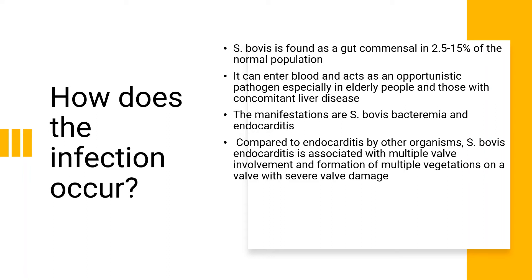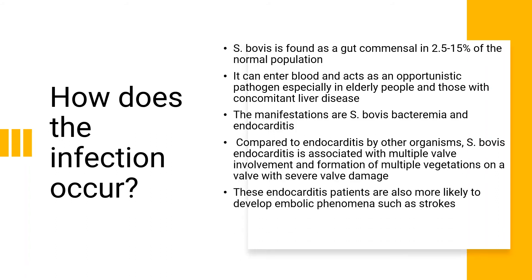At the same time, there is formation of multiple vegetations on one valve. Those are the two important features of Streptococcus bovis endocarditis. Because of these features, there is more valve damage in Streptococcus bovis endocarditis compared with other types of endocarditis. These endocarditis patients are also more likely to develop embolic phenomena such as strokes, because more vegetations mean more emboli.